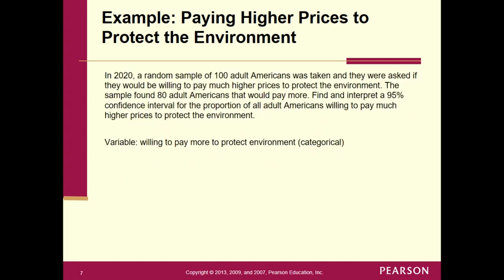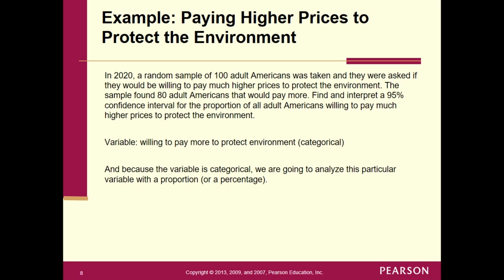The underlying variable — the thing that changes from person to person — is whether you're willing to pay more to protect the environment. That's a yes or no question, which makes it a categorical variable. And once it's categorical, we're going to analyze it with a proportion or a percentage. That's why we're working with the population proportion P — because the underlying variable is categorical.